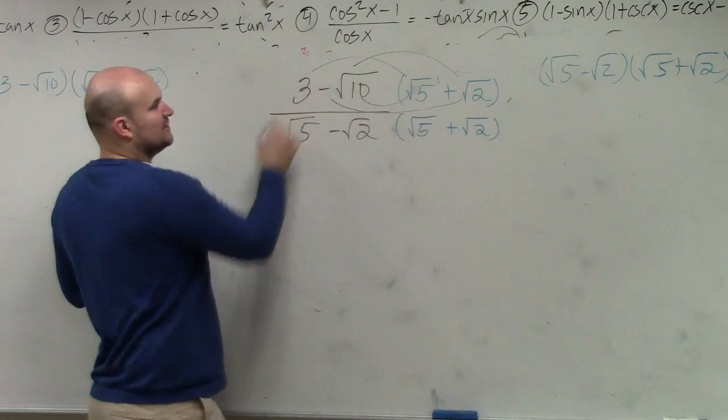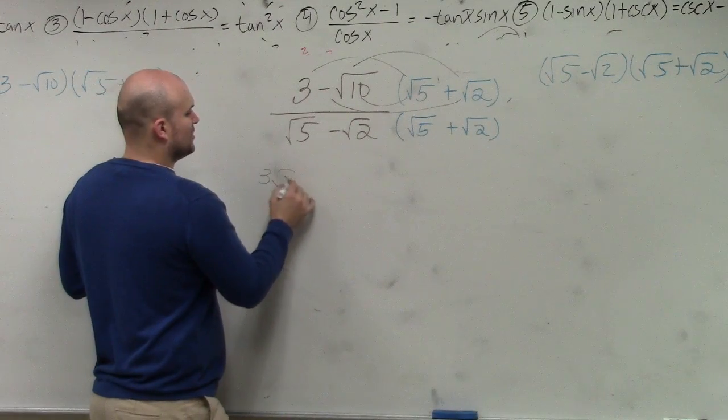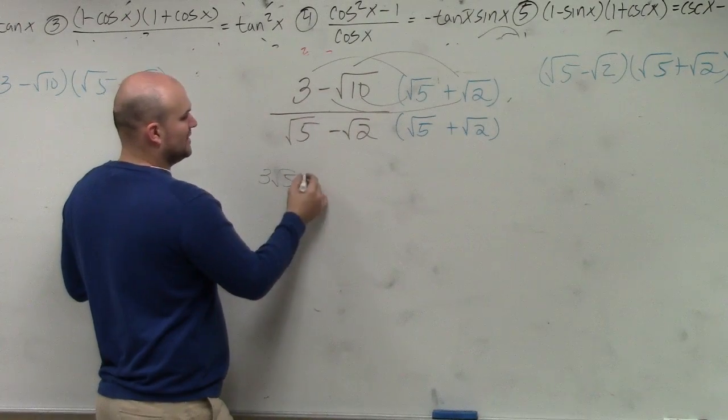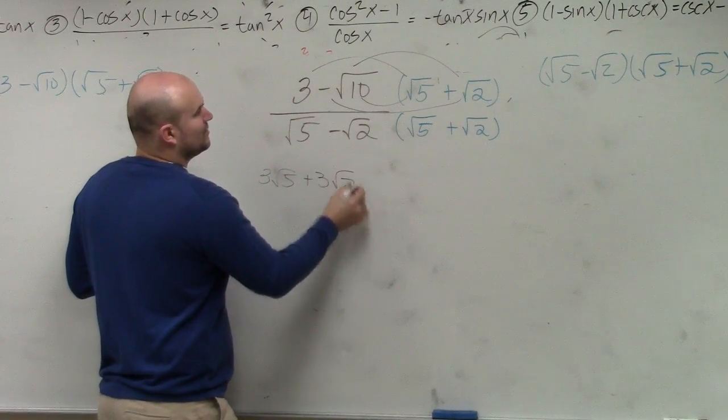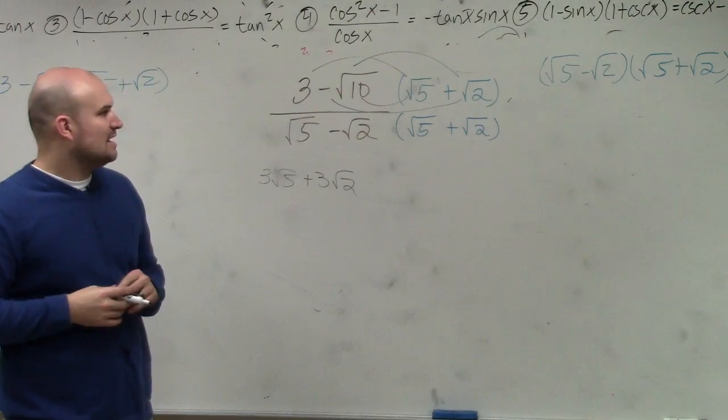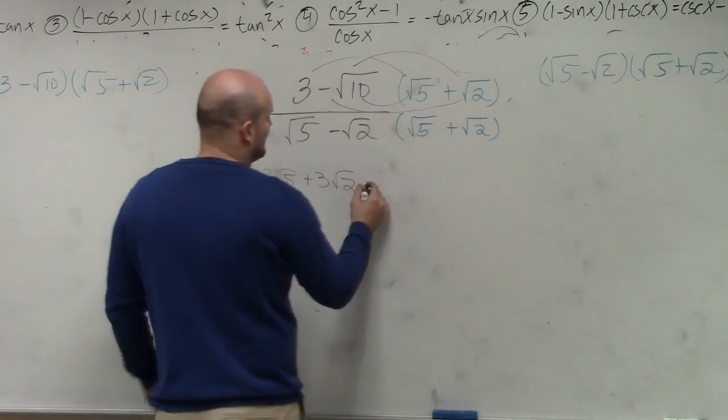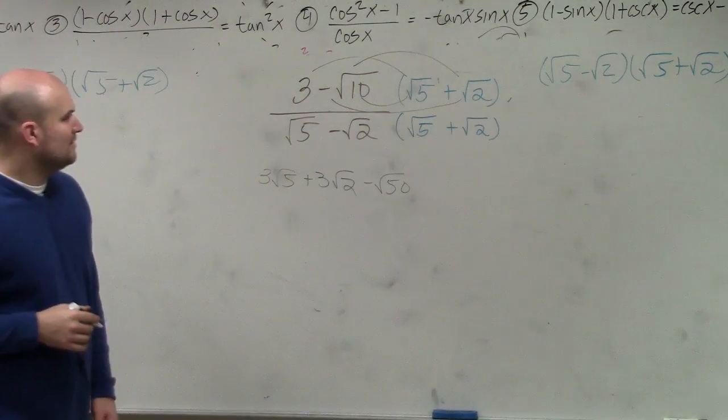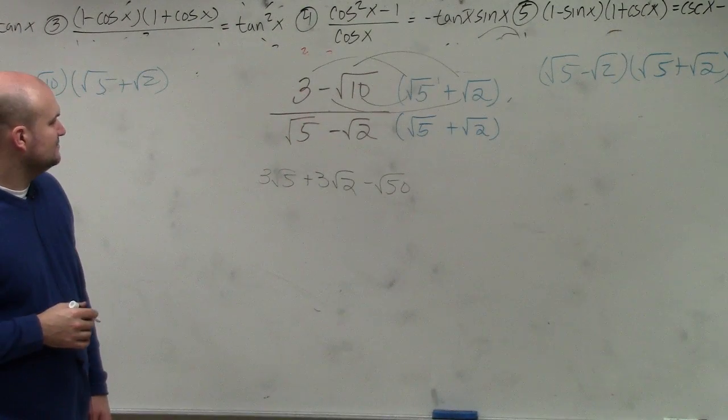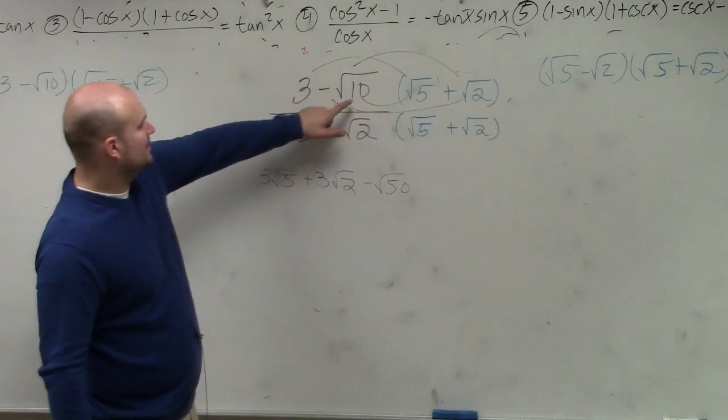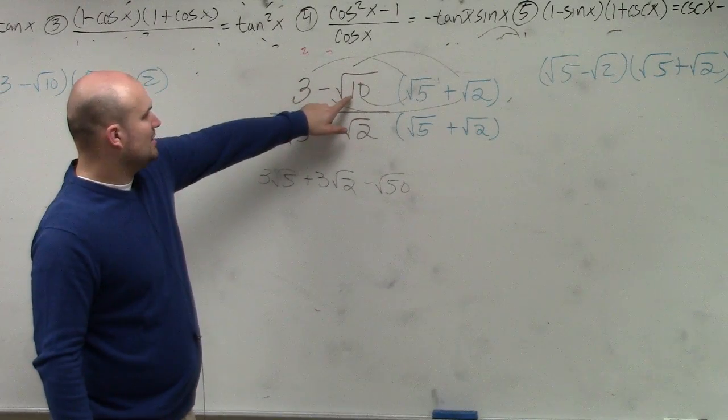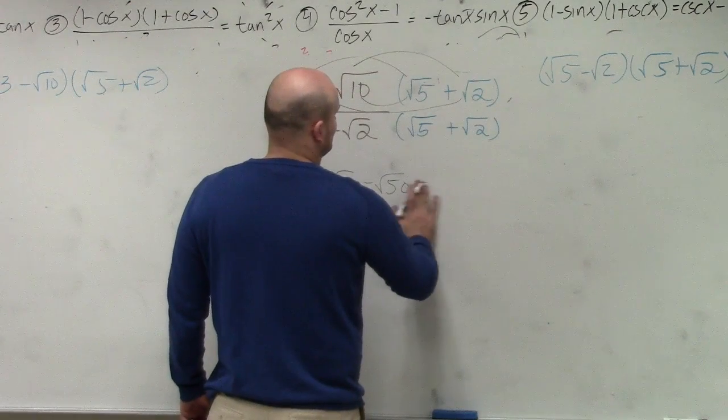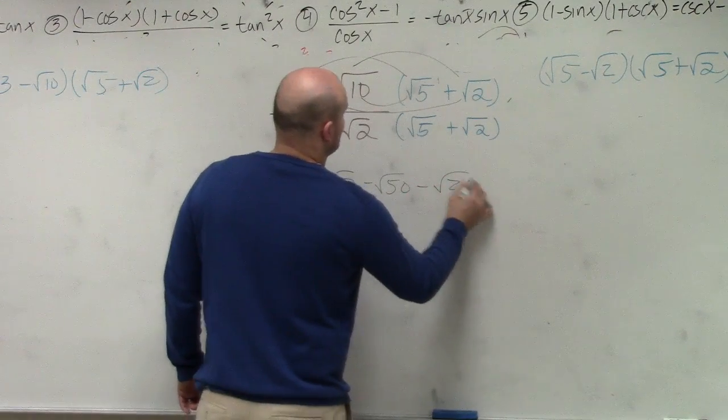Apply FOIL for the top. So 3 times the square root of 5 is 3 square root of 5. Do my outer: 3 times the square root of 2 is going to be plus 3 square root of 2. Negative square root of 10 times the square root of 5 is going to be negative square root of 50. And therefore, then I have negative square root of 10 times negative square root of 2 is going to be equal to a negative square root of 20.